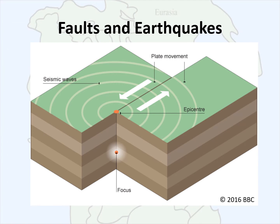Any motion along a fault can generate an earthquake. An earthquake is a seismic wave that travels through the earth's crust at varying speeds depending on the force of the disturbance. The central or origin point of the earthquake is called the focus, which is usually at a greater depth than the crust. What we feel at the surface is the epicenter, which translates directly from the focus. Seismic waves then radiate outward from the epicenter and travel through the crust and through the mantle and core of the earth.